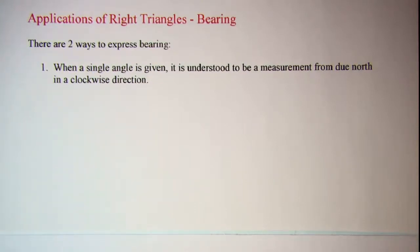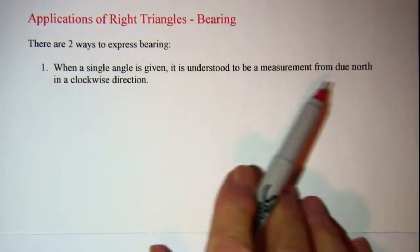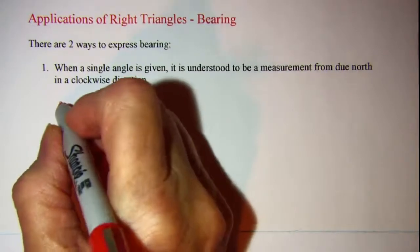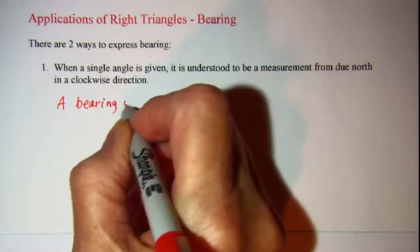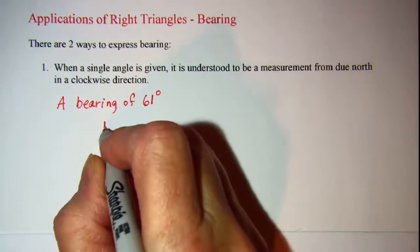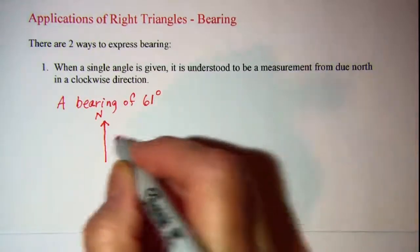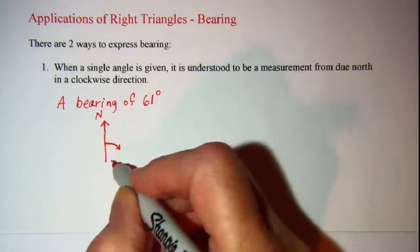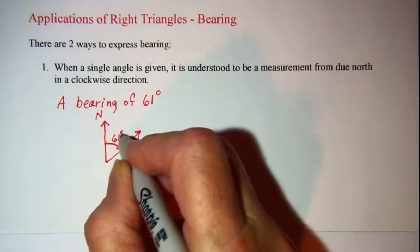There are two ways to express bearing. When a single angle is given, it is understood to be a measurement from due north in a clockwise direction. So a bearing of 61 degrees, we would start with our due north and then go clockwise so that the terminal side then was 61 degrees away. This would be a 61 degree angle.